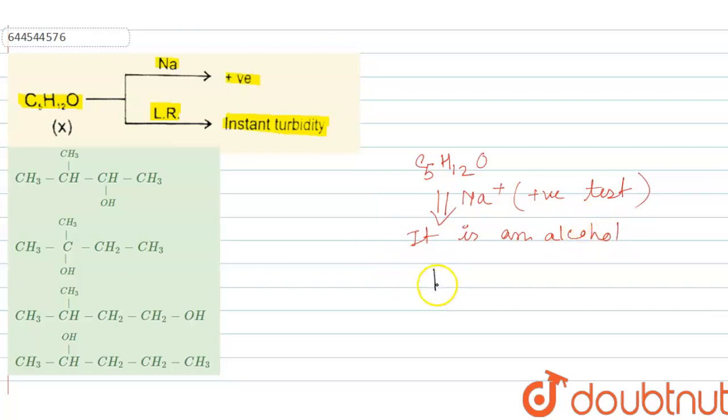Again when this compound reacts with Lucas reagent - Lucas reagent which is anhydrous zinc chloride and HCl - it reacts instantly. That is, instant turbidity is formed, which means it is a tertiary alcohol.